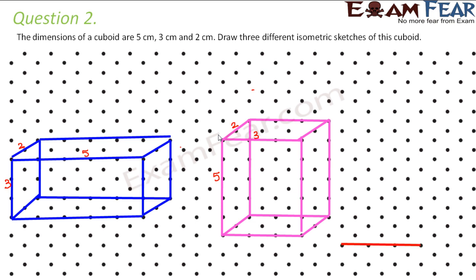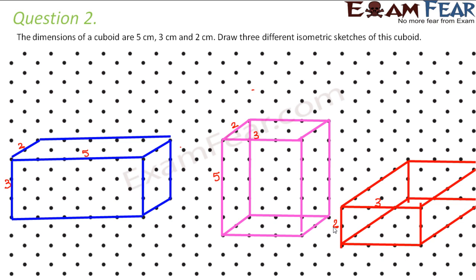For the third scenario, we consider the front face as 3 cm by 2 cm, making the depth 5 cm. So we draw a 5 cm depth from all four vertices and complete the back rectangle. All three cuboids have the same dimensions of 5×3×2 — it is just that we have drawn them considering different views of the same cuboid.